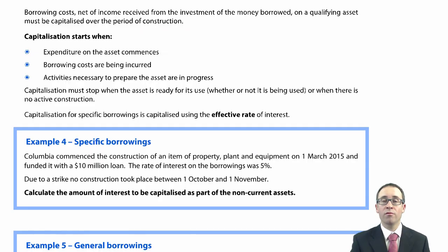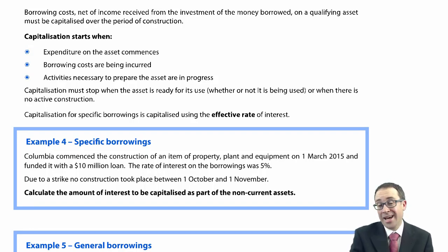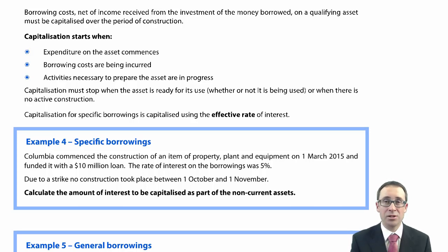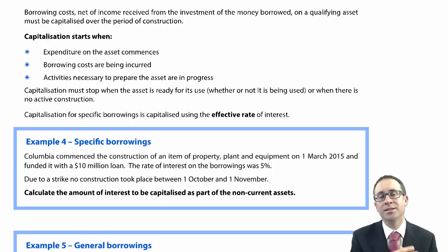Let's now have a look at the world of borrowing costs. It's another standard that you've seen previously at F7 level. It was a very small part of F7 — you were maybe lucky enough to get part of a question containing it, but other than that, it was very rarely seen. It's still rarely seen at P2 level, but that doesn't mean we can ignore it. We need to have knowledge of it just in case it does arise.